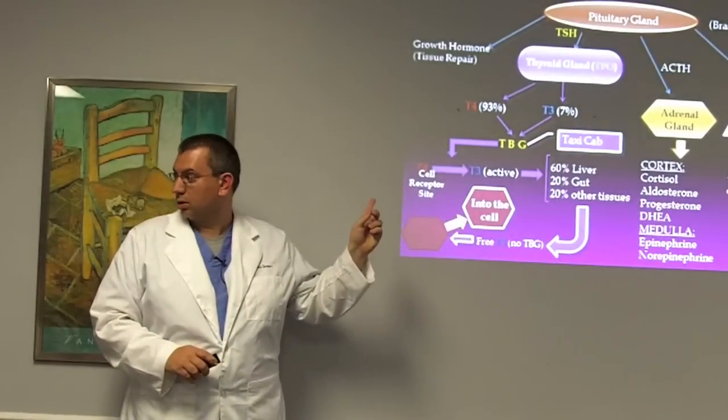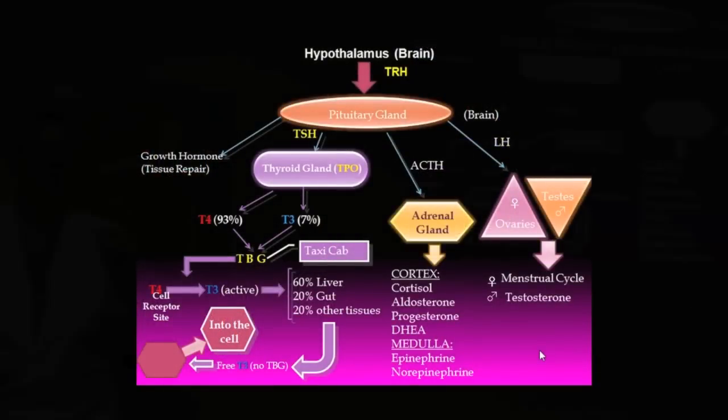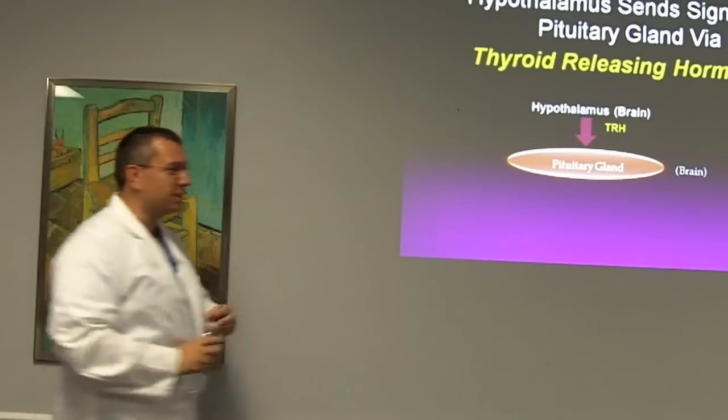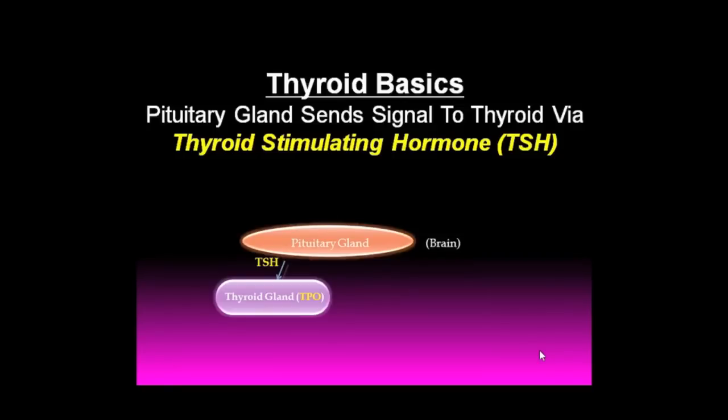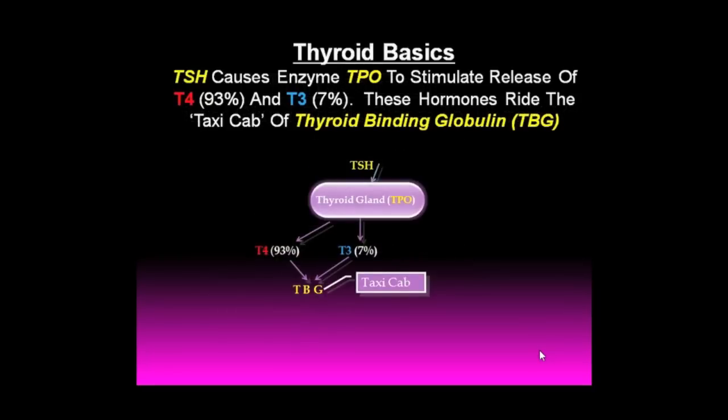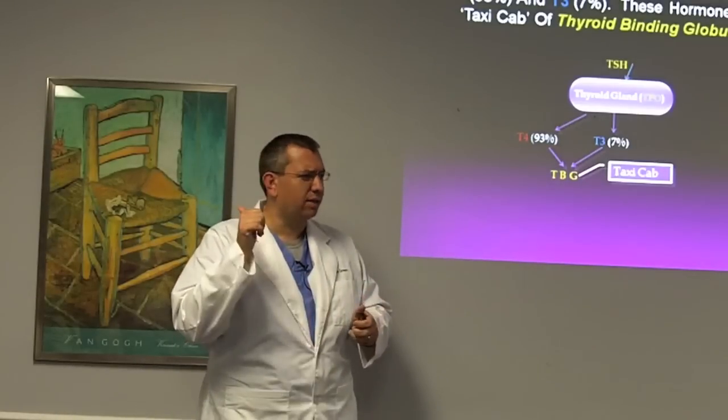So this is how the thyroid works. A piece of the brain called the hypothalamus sends signals to the pituitary gland through a hormone called TRH, or thyroid-releasing hormone. That tells the pituitary gland to help release something that I know you've all heard of, TSH. Now TSH goes from the pituitary to the thyroid and actually tells the thyroid gland to make hormone. The thyroid produces two hormones: T4 and T3. 93% of what the body makes is T4. Only 7% produced by the thyroid is T3. This is very important.